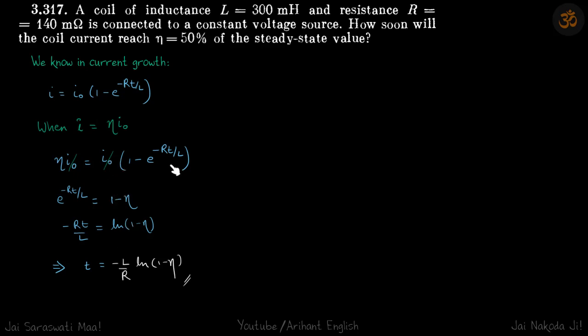We just solve it and we will get that the time when this happens is minus L by R ln. So here 1 minus Eta is obviously less than 1, so this quantity will also be negative. So negative and negative will become positive.